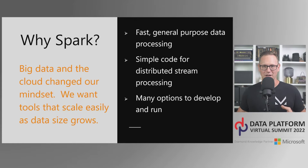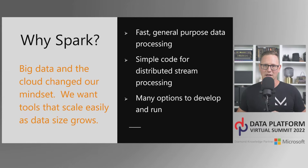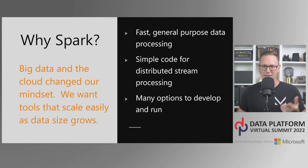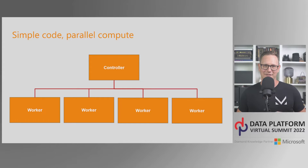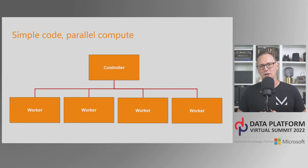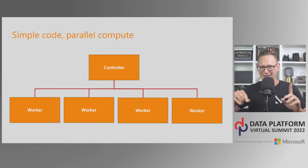Apache Spark really came about with the big transition to big data tools. We wanted tools at scale easily as data size grows. It is a fast, general purpose data processing framework — simple code for distributed processing — and it runs in quite a few different environments: Azure Synapse Spark, Databricks, on your own VMs, Kubernetes, Docker containers. With distributed computing, we have a controller node that accepts code, breaks it out onto different worker nodes, and splits up the workload.